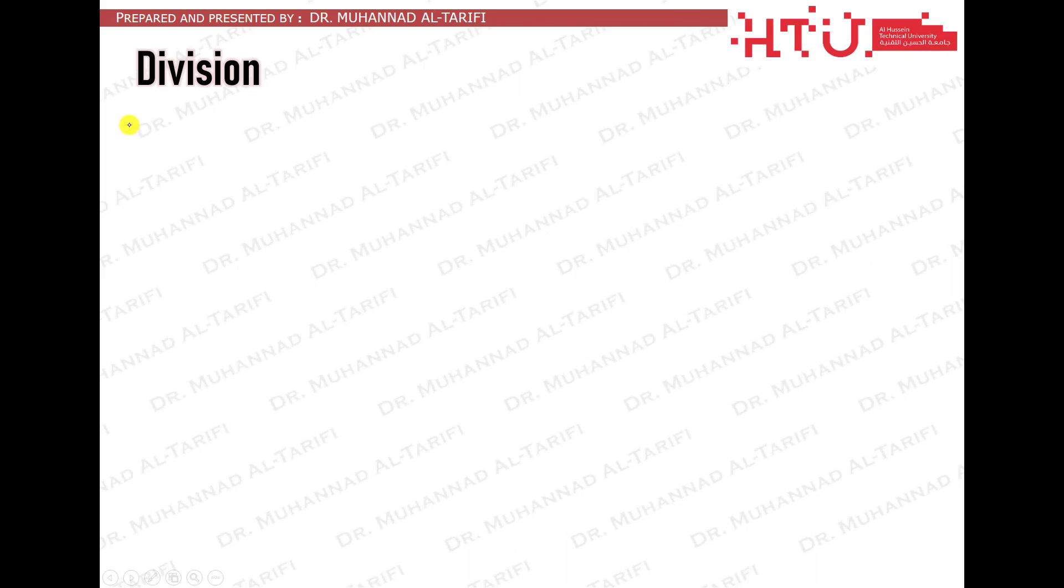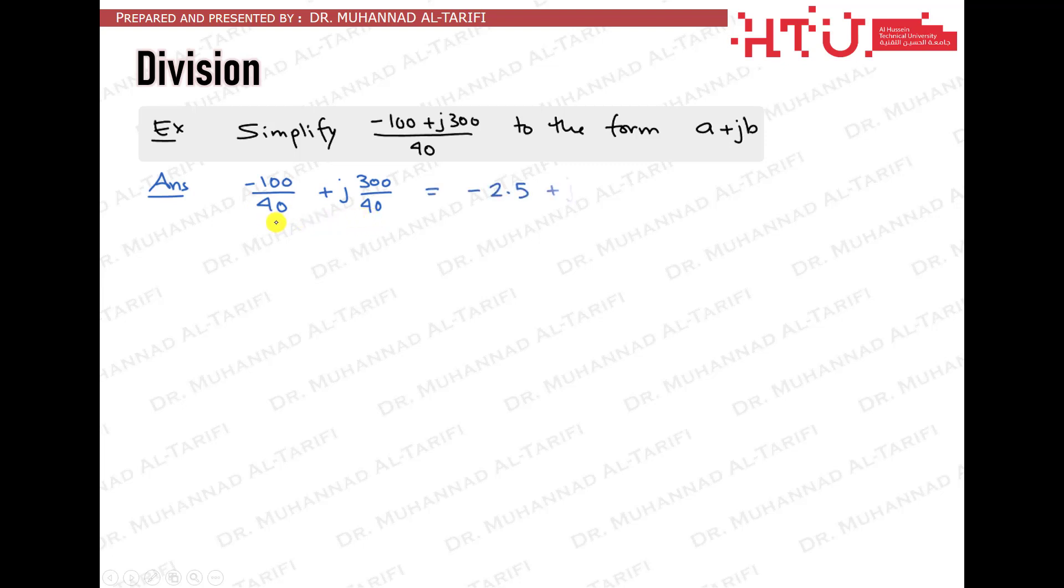One of the major applications of conjugates is in division operations. When a complex number is divided by a real number, then we simply distribute both terms of the numerator on that single real number. If the denominator is a purely imaginary number, then we get rid of the j by multiplying by another j to get the real denominator. Then we distribute the numerator as usual.